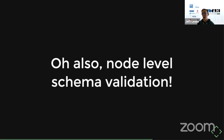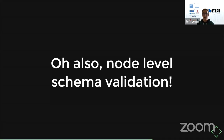Confluent has been working on node-level schema validation, which makes it so your brokers can check messages as they're being produced to ensure the records match the schemas supplied for those topics. Without this feature, even with schema registry, you can technically produce any record you want to Kafka — they're just bytes. Node-level schema validation prevents that, ensuring everything a producer sends matches the schema provided for that topic.